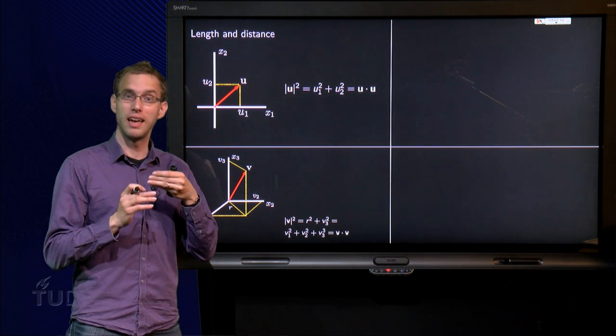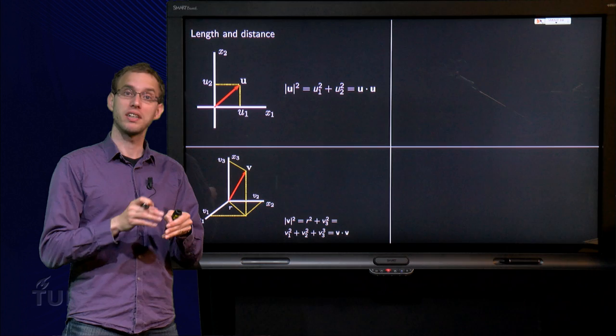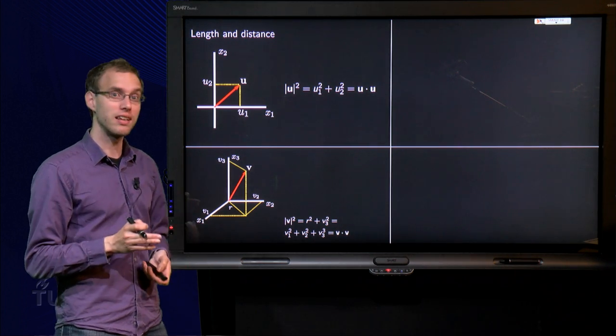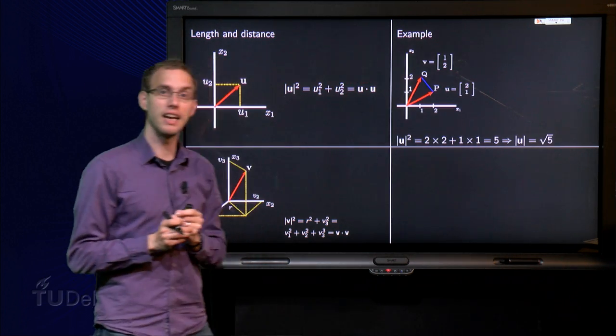So we see that you can use the inner product of a vector with itself in order to compute its length. So let's look at some explicit examples.